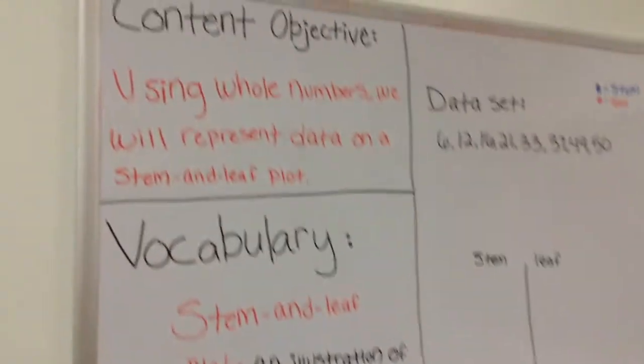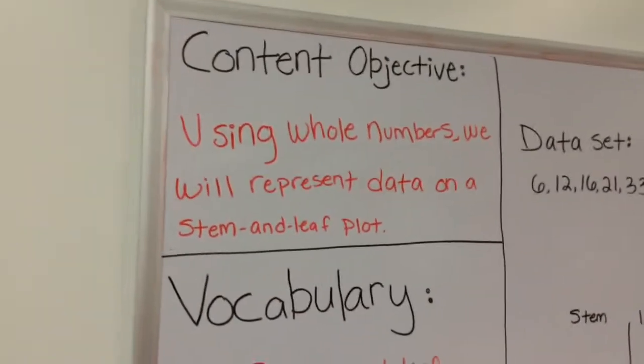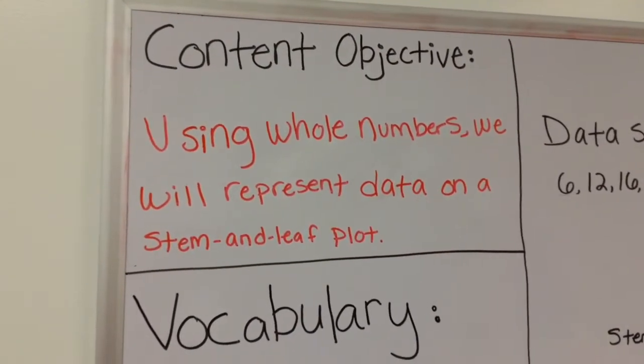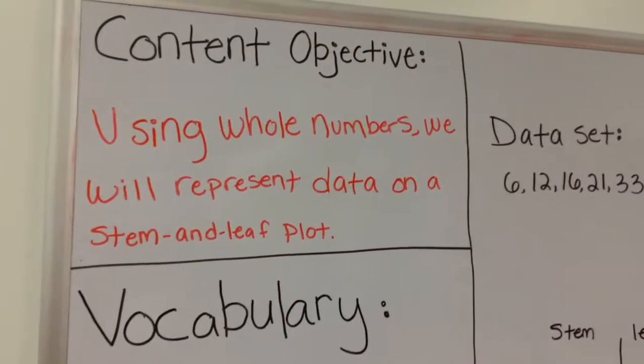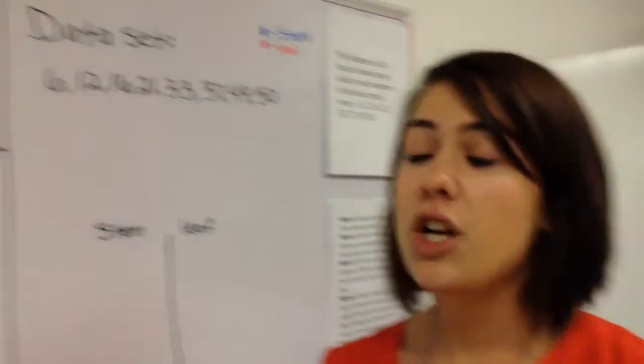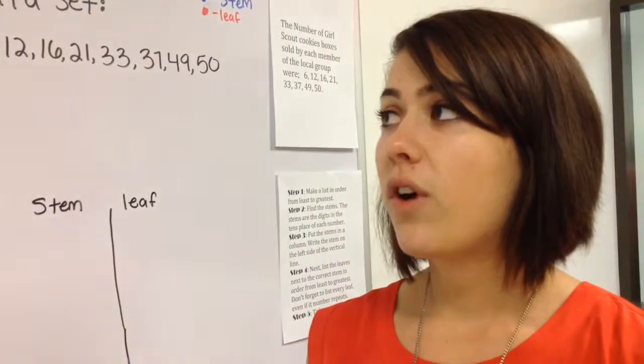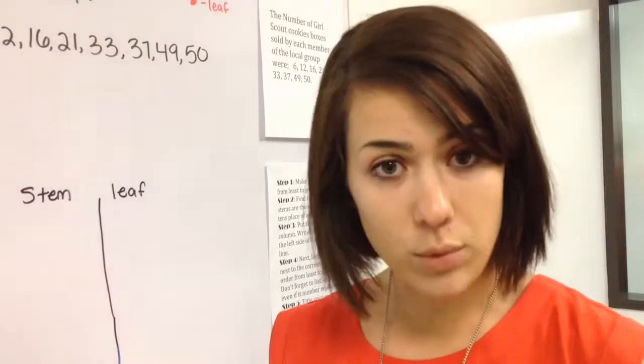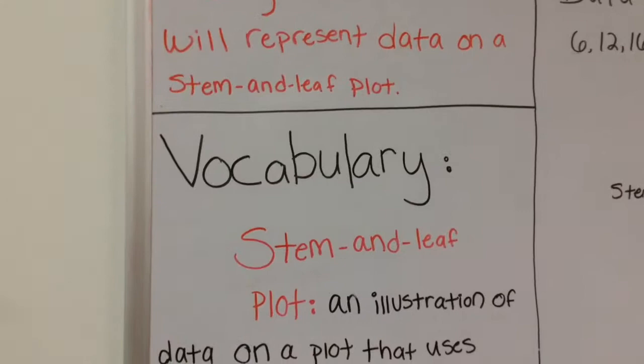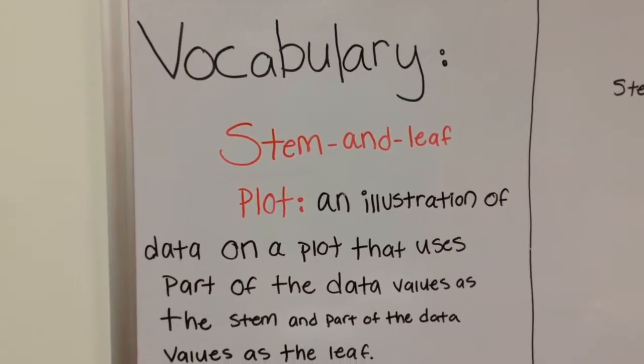Our lesson for today, we need to start with our content objective. What are we going to be learning today? We're going to be using whole numbers, and we will represent data on a stem and leaf plot. This is going to be branching off of things we've already learned. We've already learned how to use whole numbers and fractions on a frequency table, and we've used them on our line plots. So this is going to be something new. We're going to be doing a stem and leaf plot. It's another way to represent data.